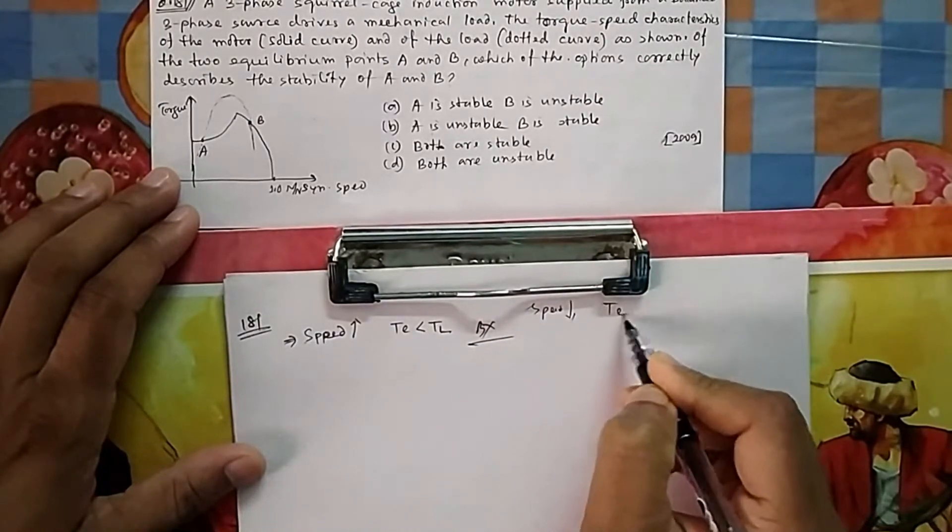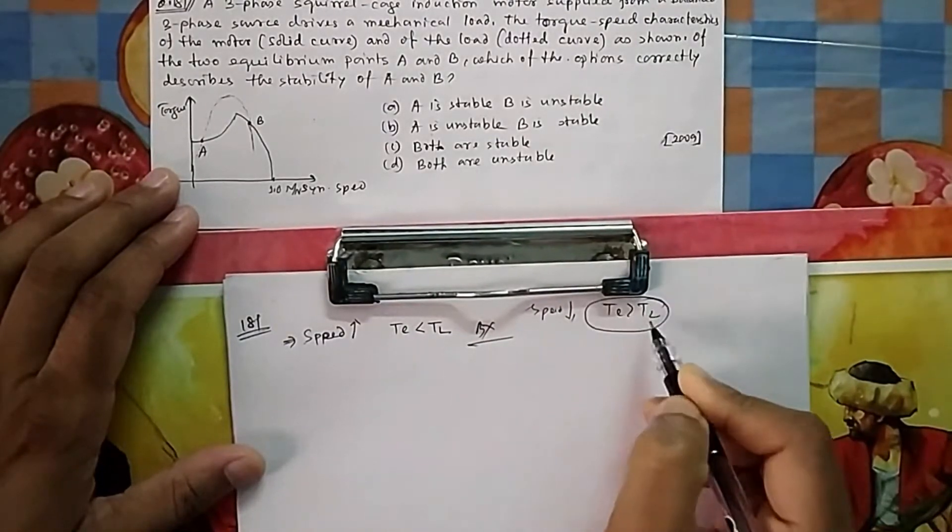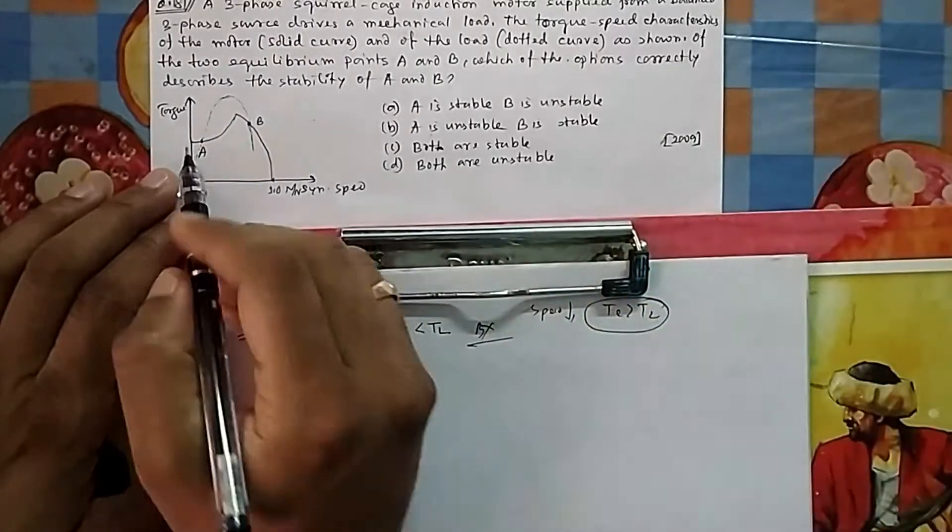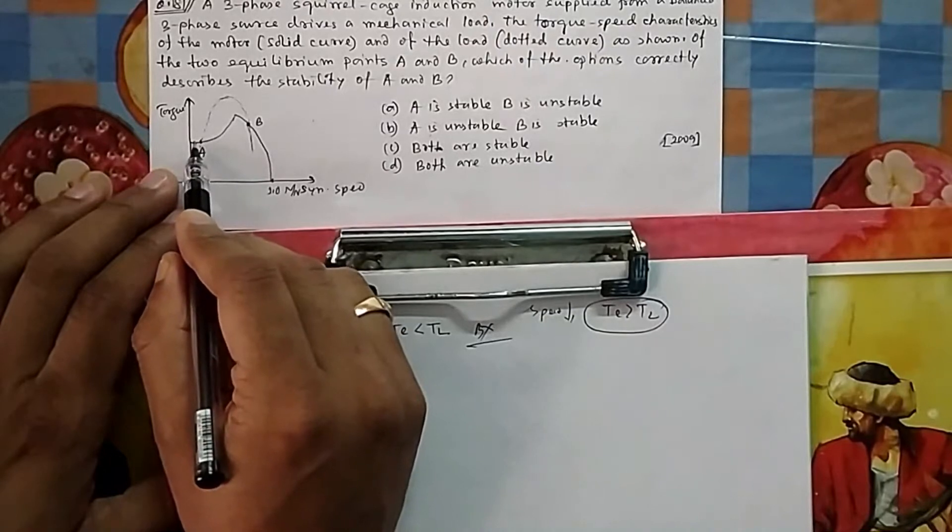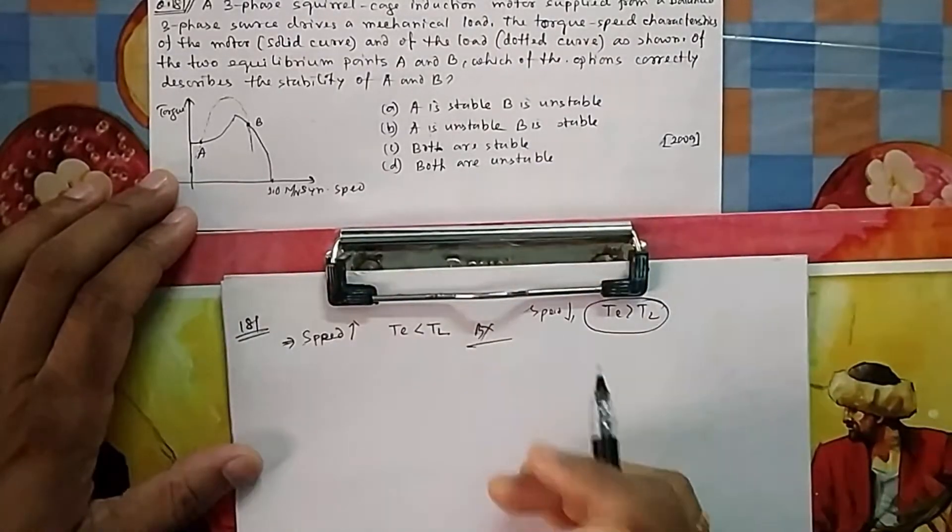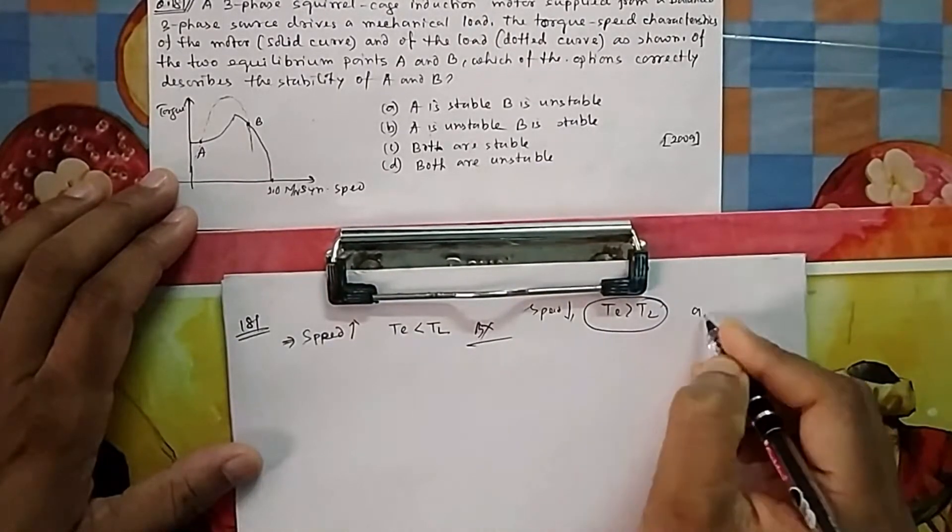If speed is somehow reduced, what should be the natural tendency? TE should be greater than TL so motor speed increases. If it comes here, you can see TE is greater, so it will push the operating point towards A. It will go back to A. Therefore A is stable, B is unstable, option A.